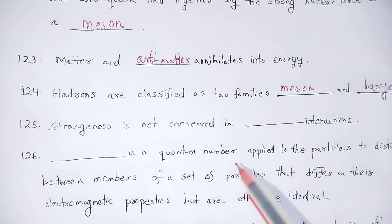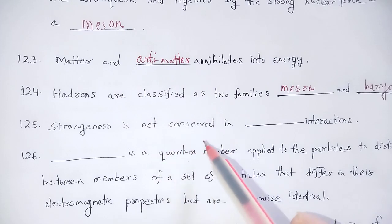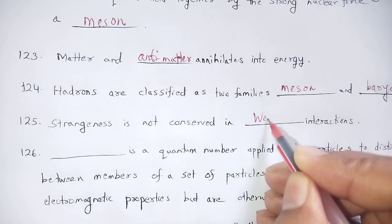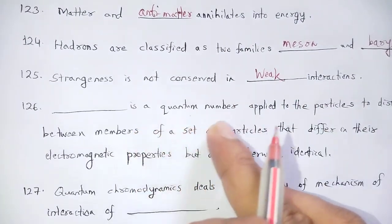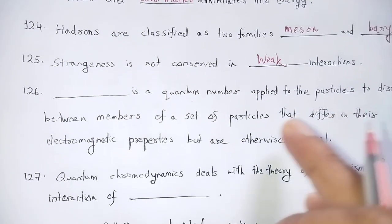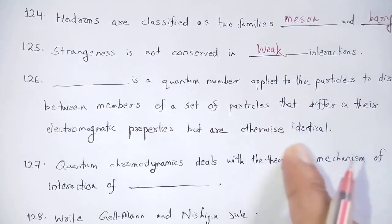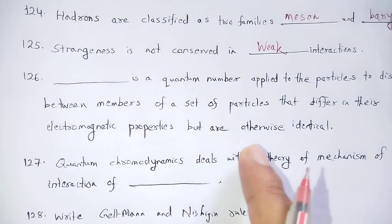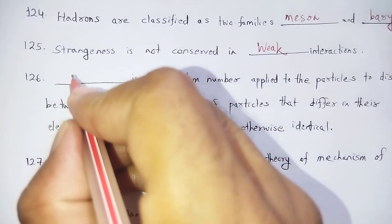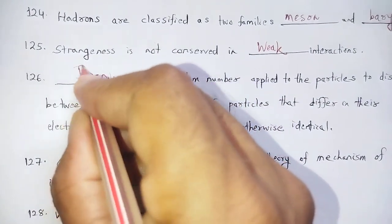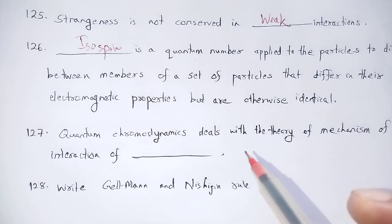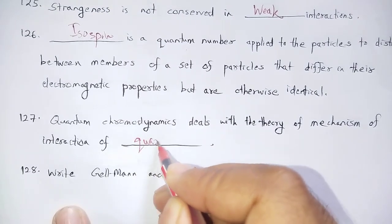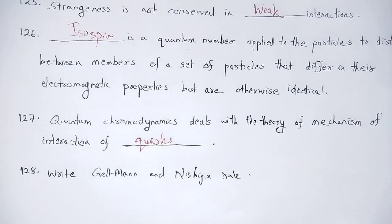Strangeness is not conserved in weak interactions. Isospin is the quantum number applied to particles to distinguish between members of a set of particles that differ in their electromagnetic properties but are otherwise identical. Quantum chromodynamics deals with the theory of interactions of quarks.